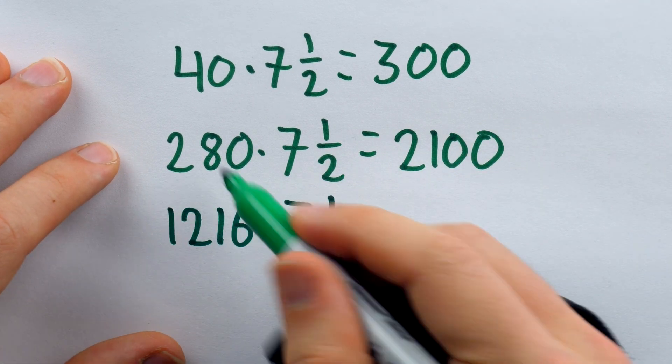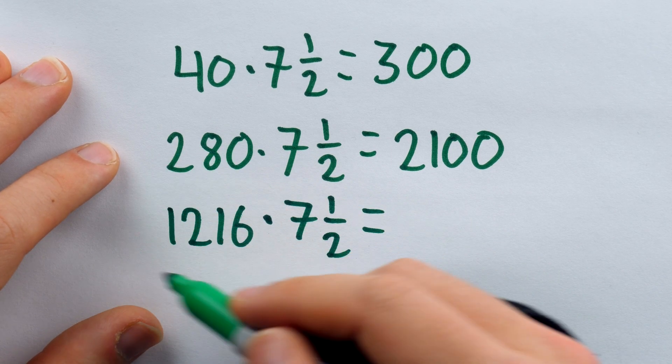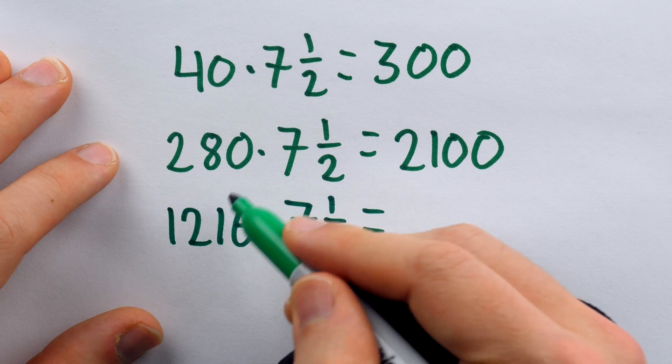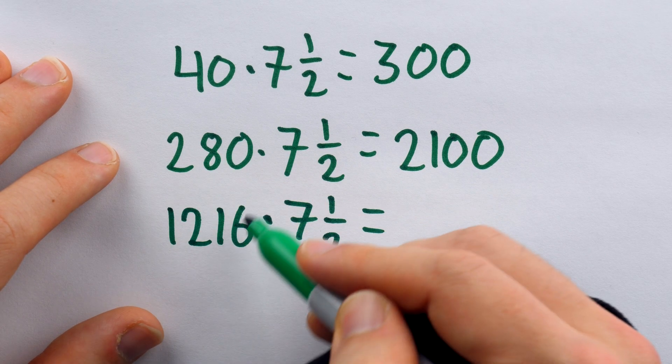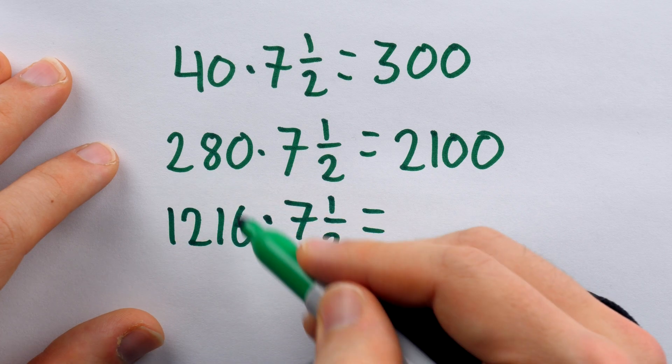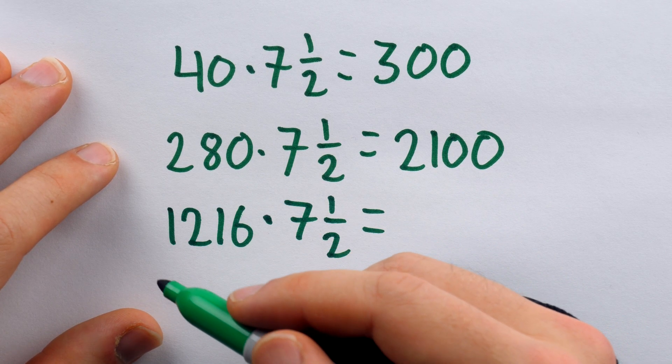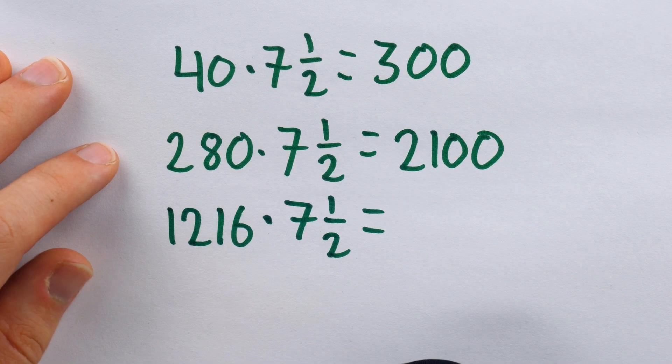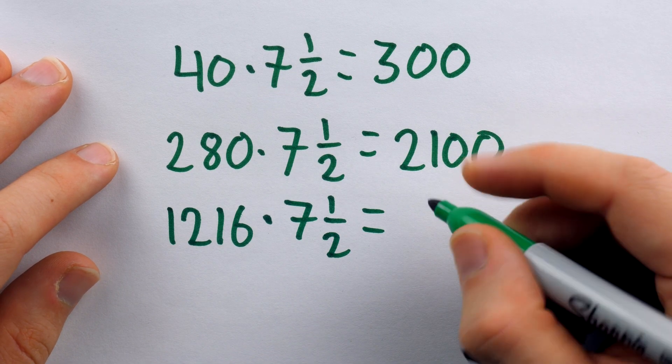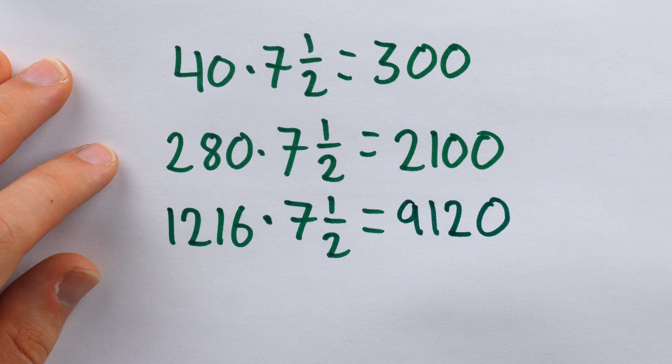What about 1216 times 7 and a half? To figure out a fourth of this maybe takes just a little bit more thought. A fourth of 1,200 is 300, and a fourth of 16 is 4. So a fourth of this is 304. We need to take that away, and then multiply by 10. 1216 minus 304 is 912. And then we just multiply that by 10. So, 9,120.